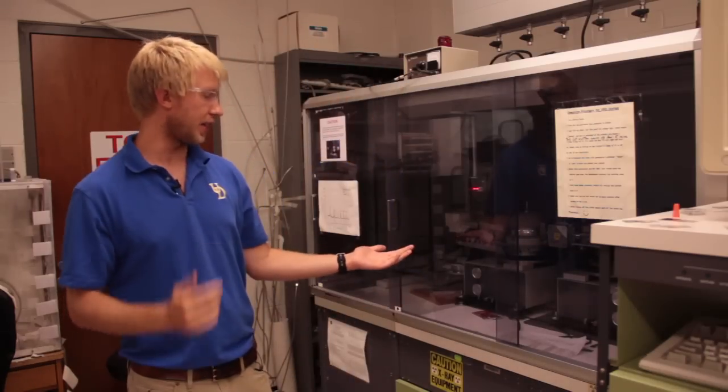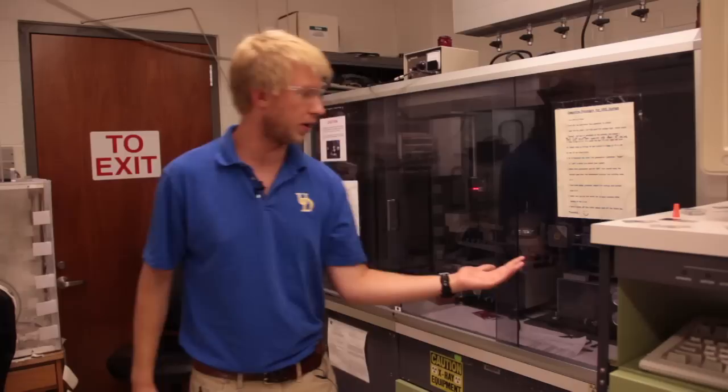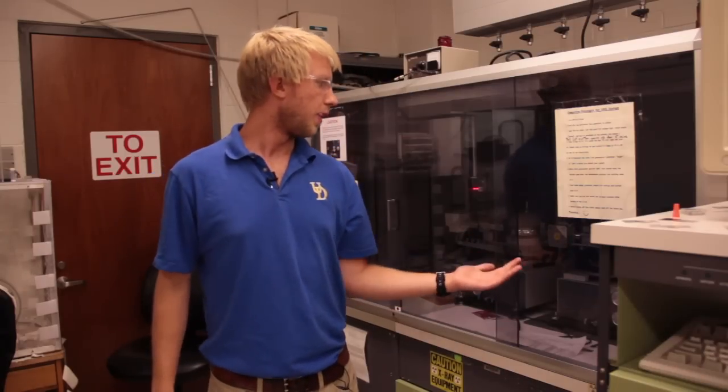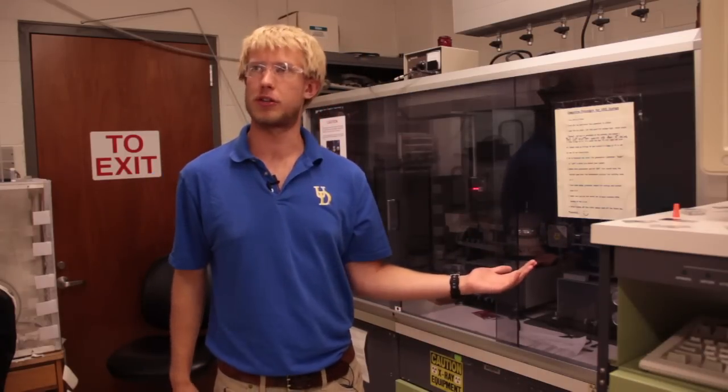This XRD machine has two halves. This one we use primarily for probing really any crystal structure. I use it to probe P3HT, PCBM solar cells.